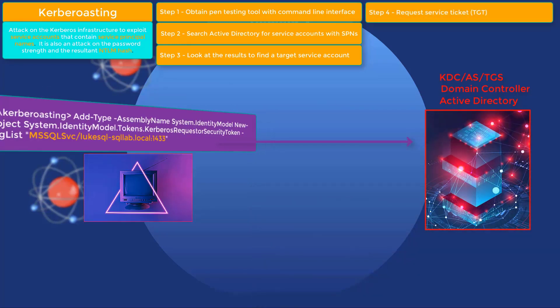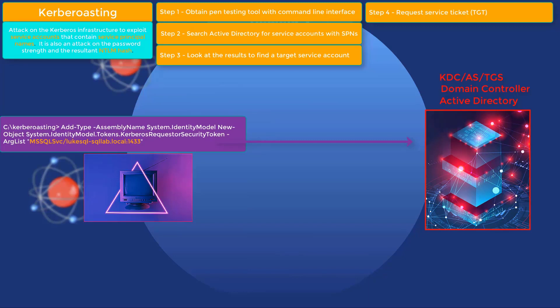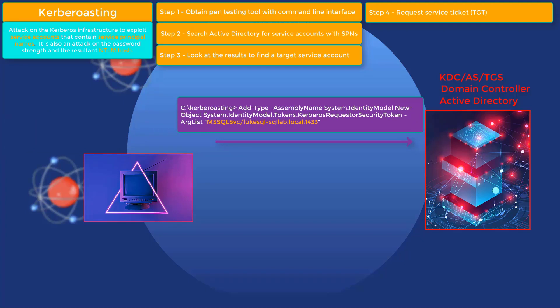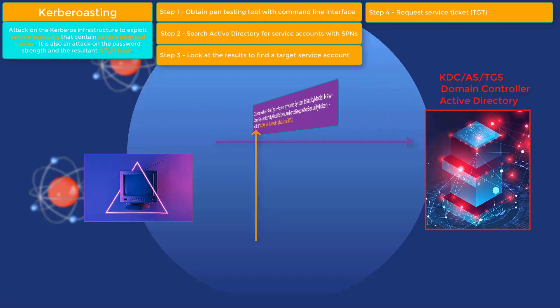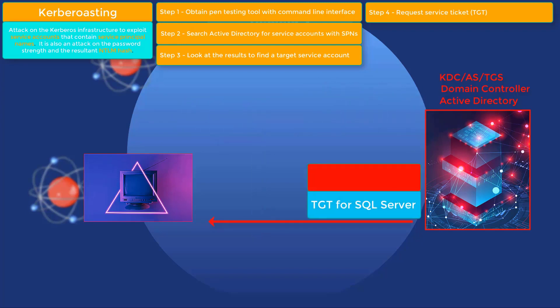Step four: using the same command line tool, we use a command to request a service ticket — a Ticket Granting Ticket, or TGT — from the Active Directory domain controller, also known as the Kerberos Distribution Center. In the command we use to request the ticket, we don't use the service account name of the SQL server, but rather the Service Principal Name. This will make the KDC send us a TGT specific to the SQL service.